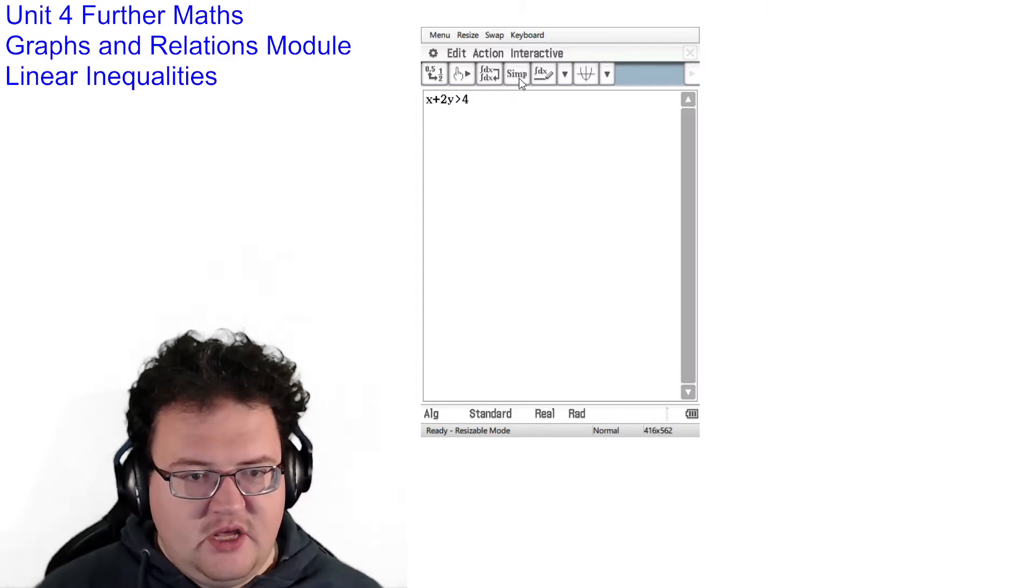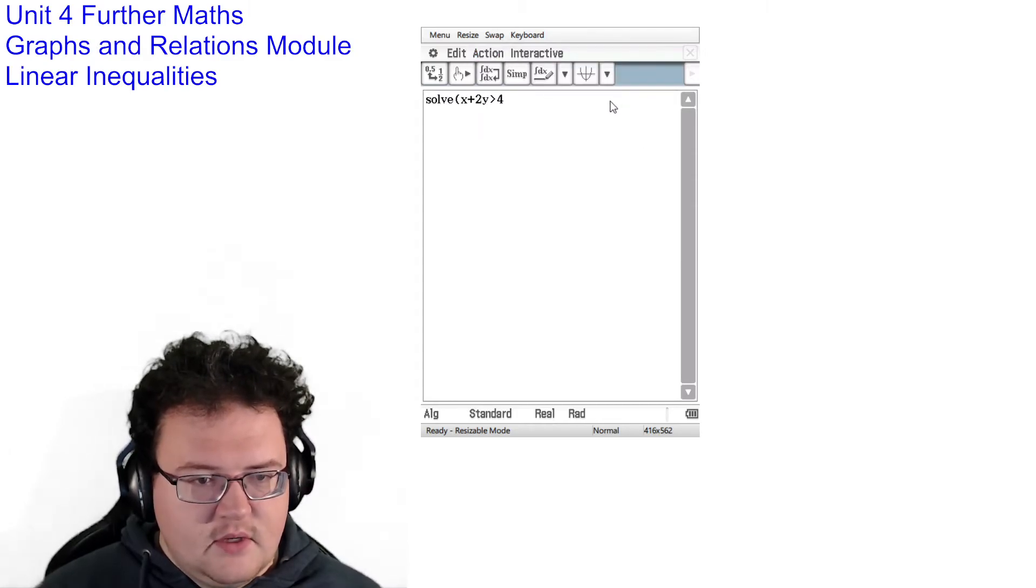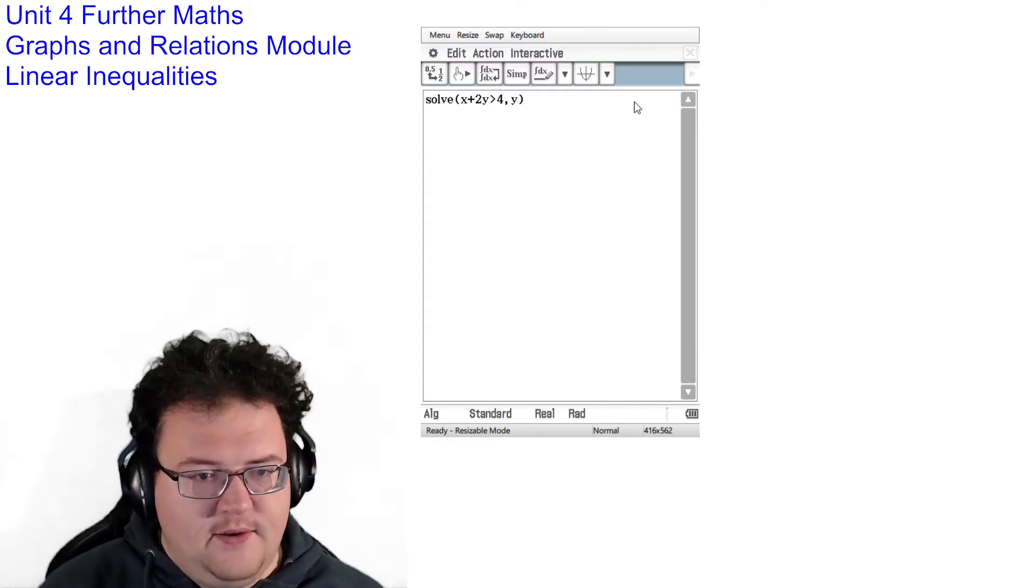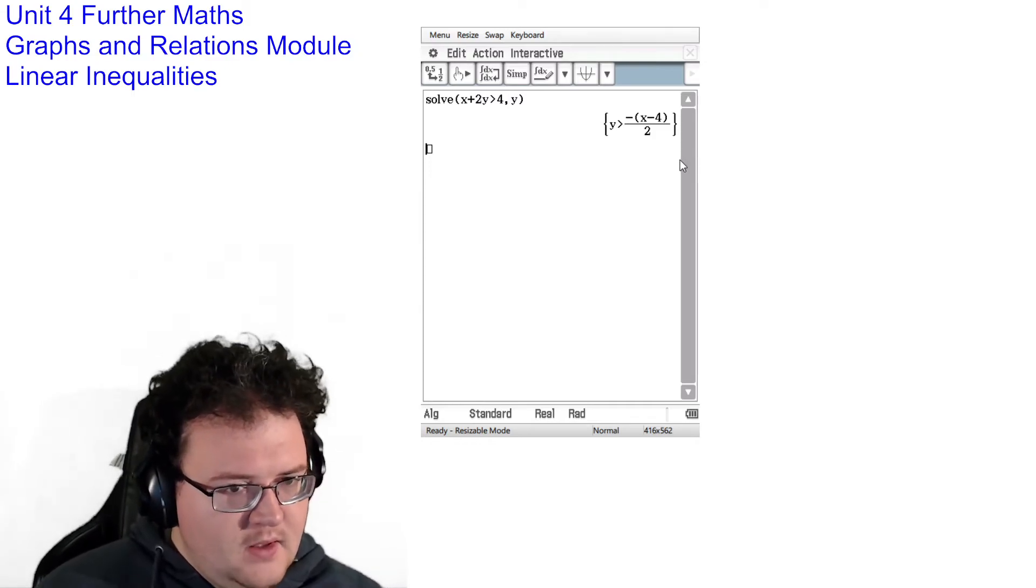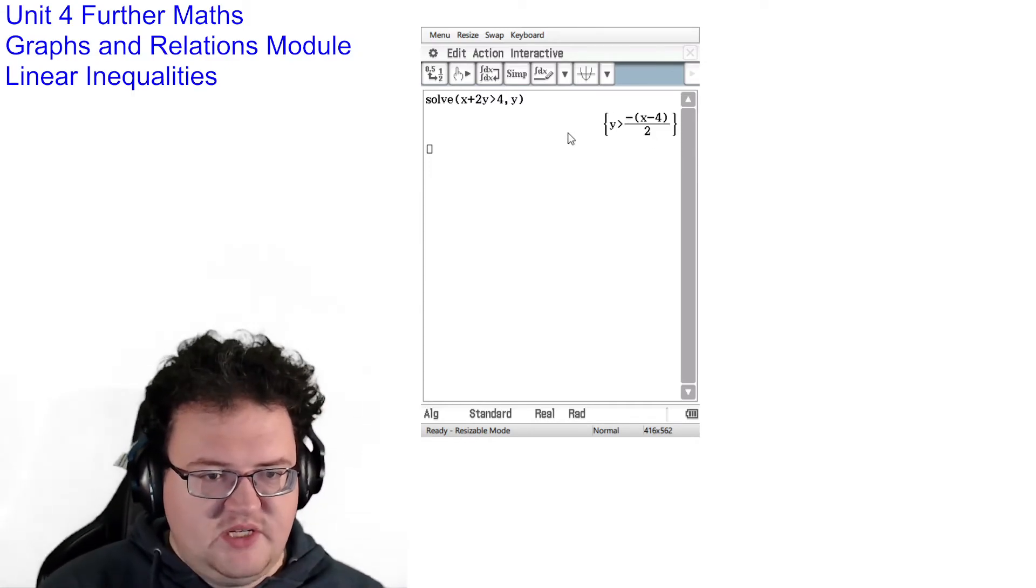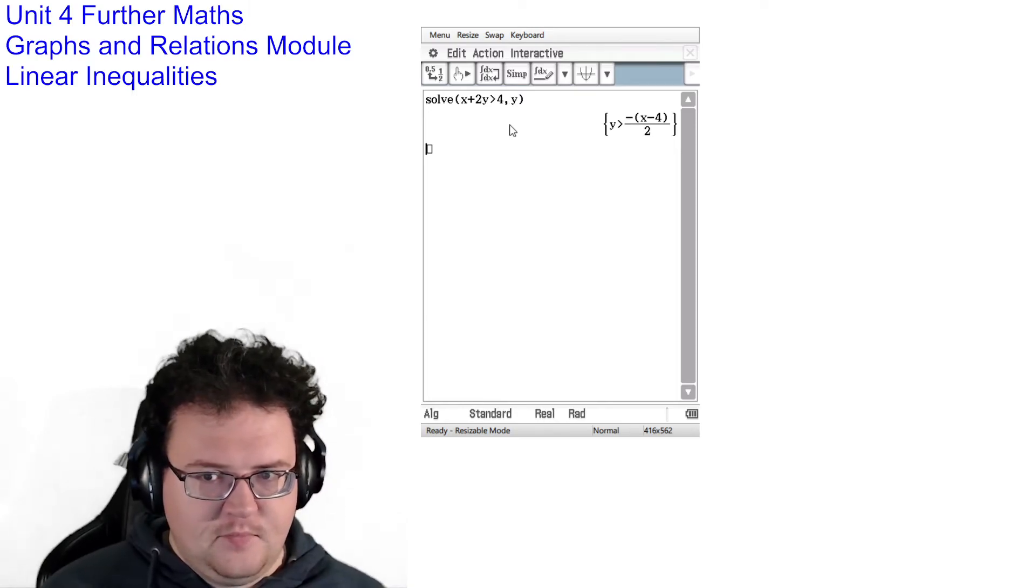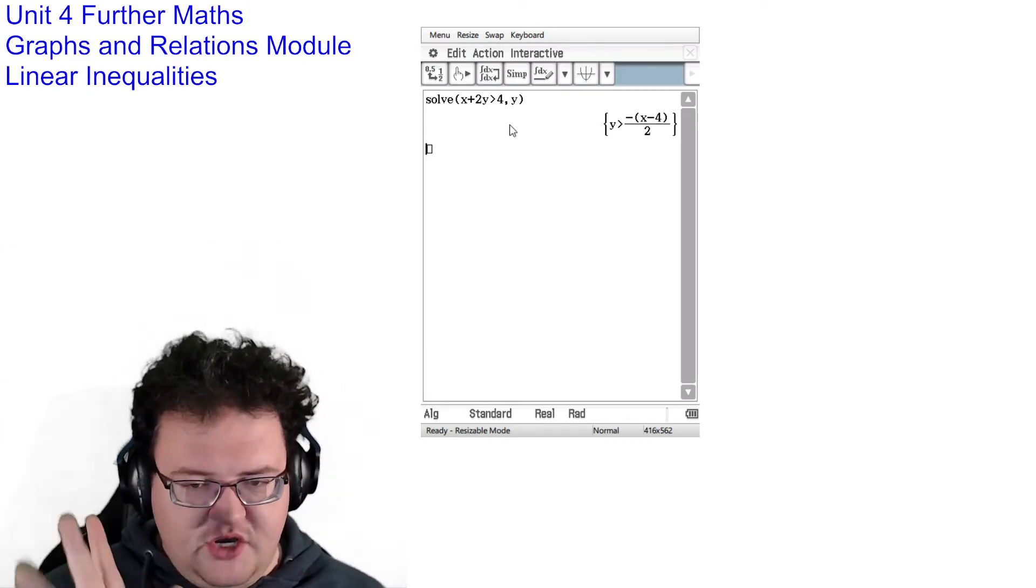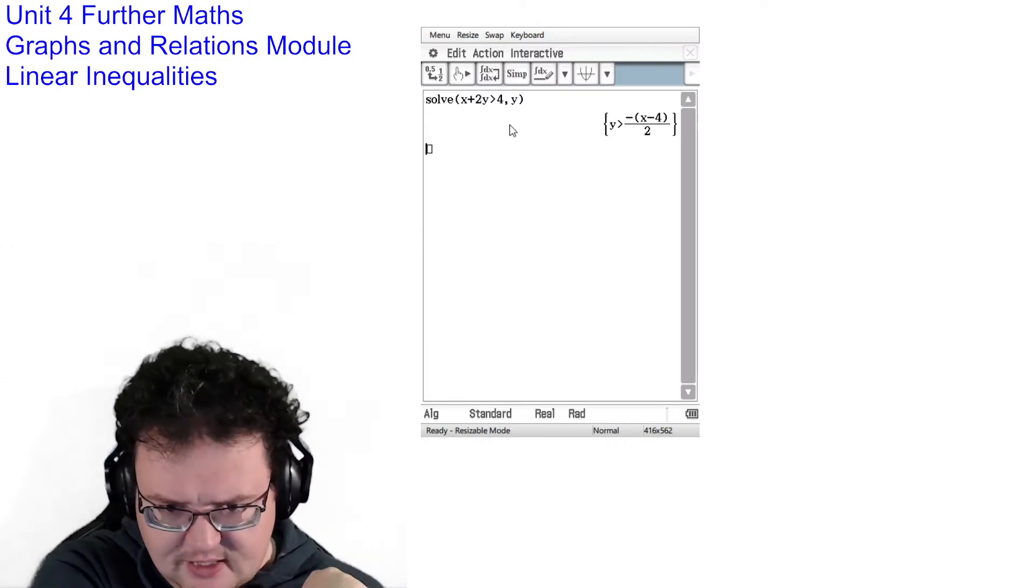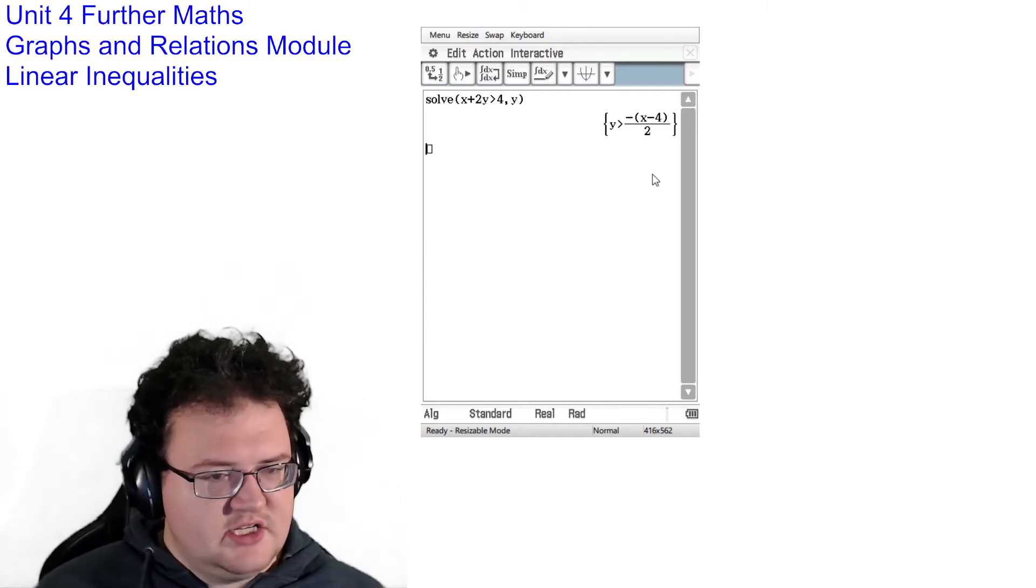I would need to rearrange this into something that my CAS can handle. And the way I do that is by using solve. So I can do action, advanced solve. And what I want to do is I want to solve for y. And what it does is it automatically rearranges it for me. Now what you'll notice sometimes is that when you rearrange these, the inequality symbol might flip around. There is a mathematical reason for that, but right now we don't need to worry about it. Mr. Kaz has got us handled. In this case here, everything's nice and hunky-dory.